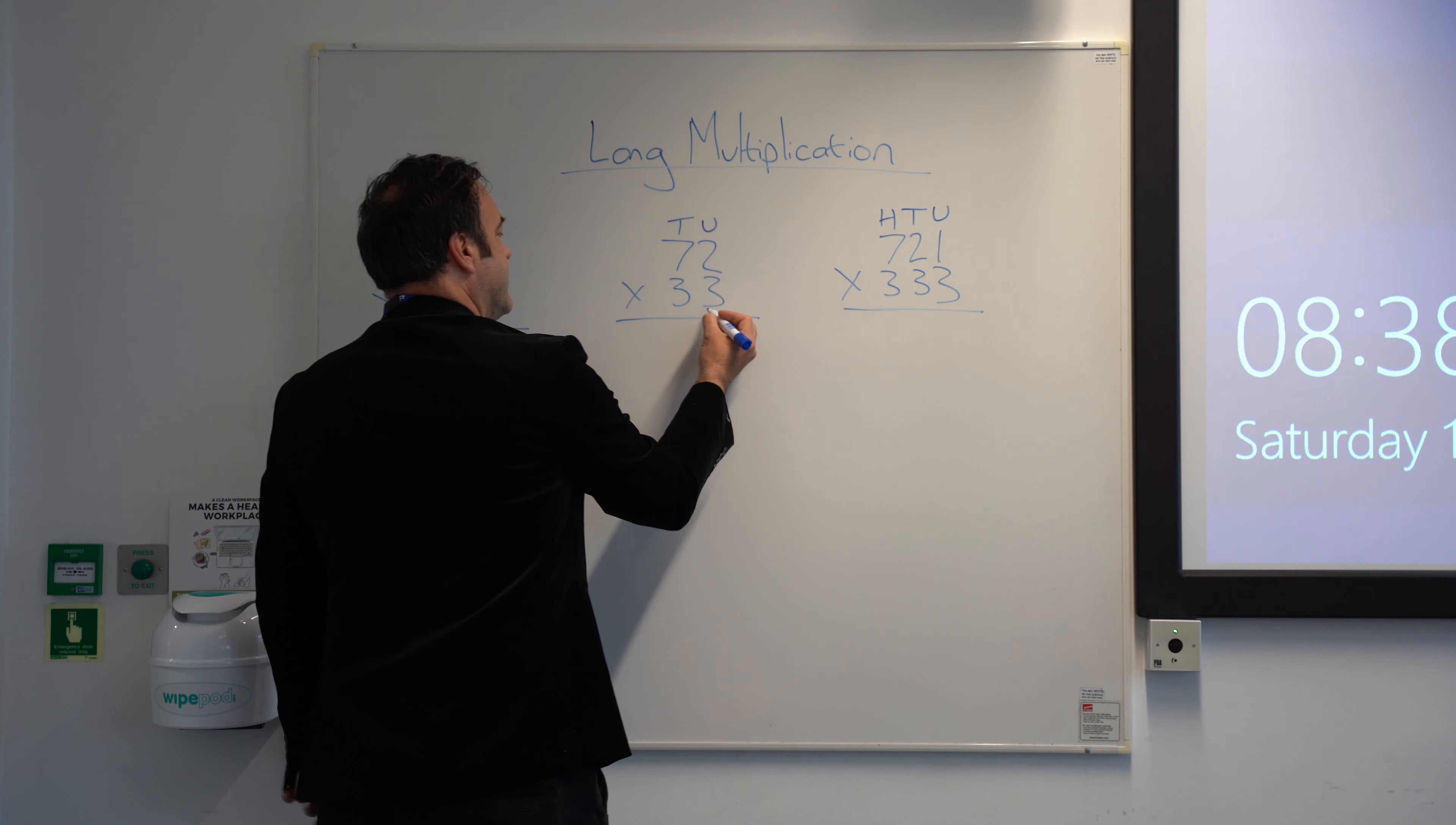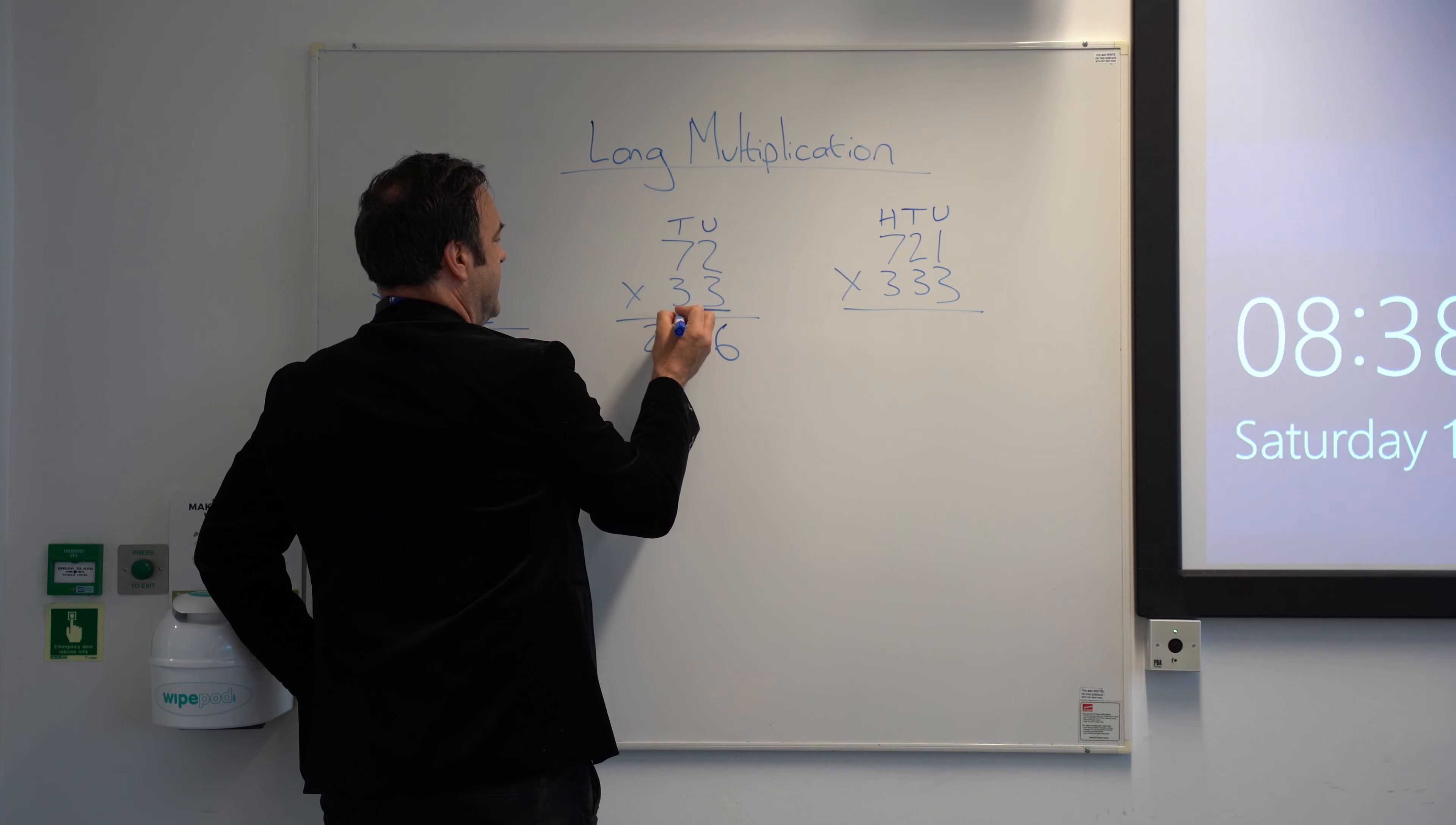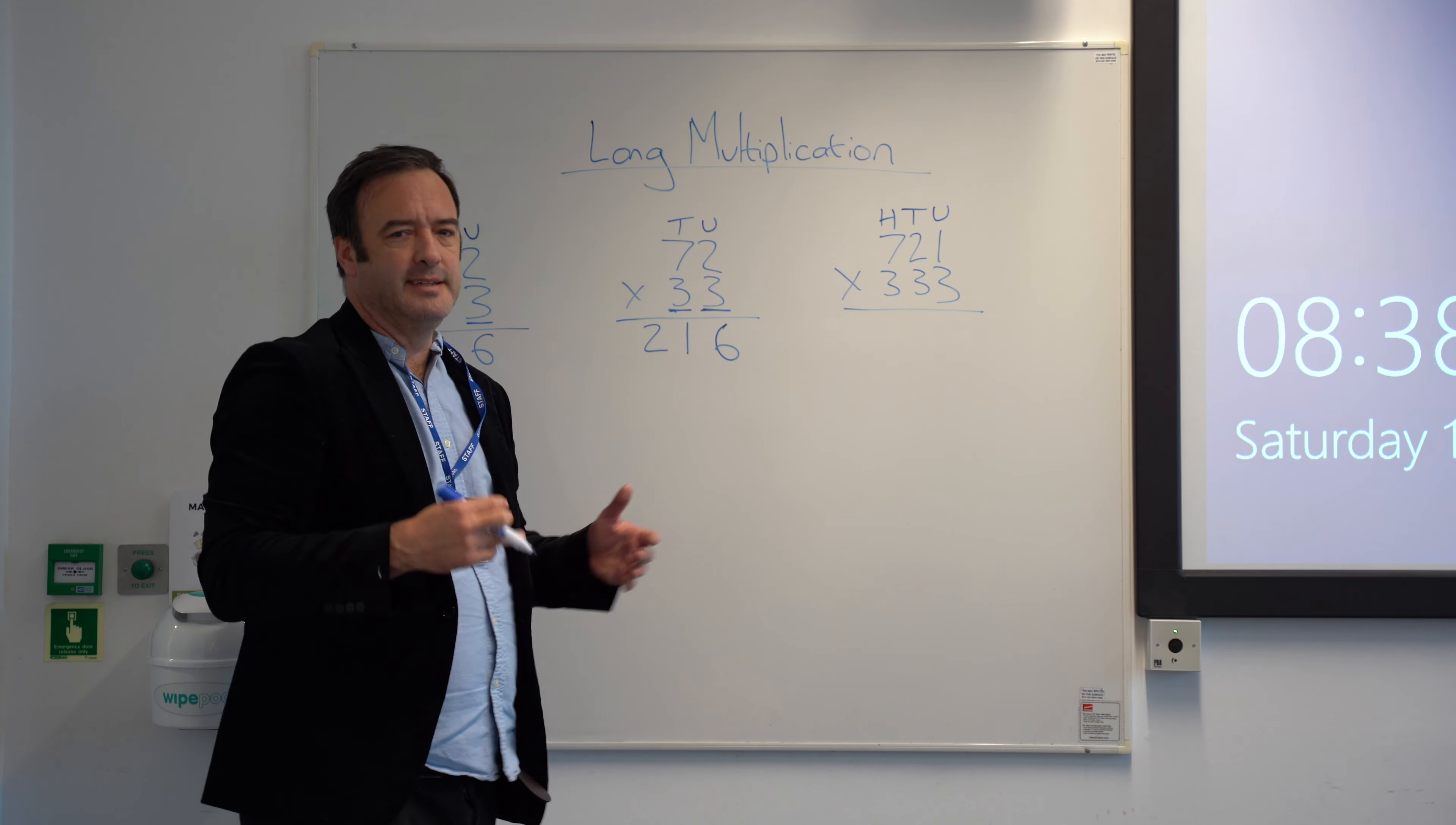Next, we're going to start with the units on the bottom number first. 3 times 2 is 6, 3 times 7 is 21. But then what we're going to do is now multiply the tens. What we're actually doing, in effect, is partitioning the problem. So we're multiplying all the units, then we're multiplying the tens, then we're adding everything together.